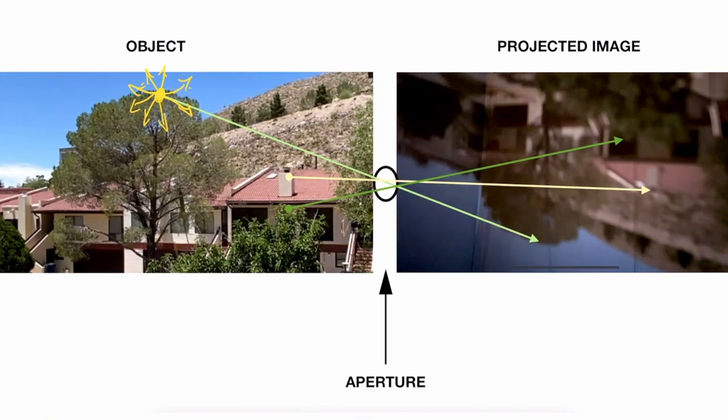We are only seeing the rays that happen to pass through the aperture and end up on our screen. We're not seeing any of these.